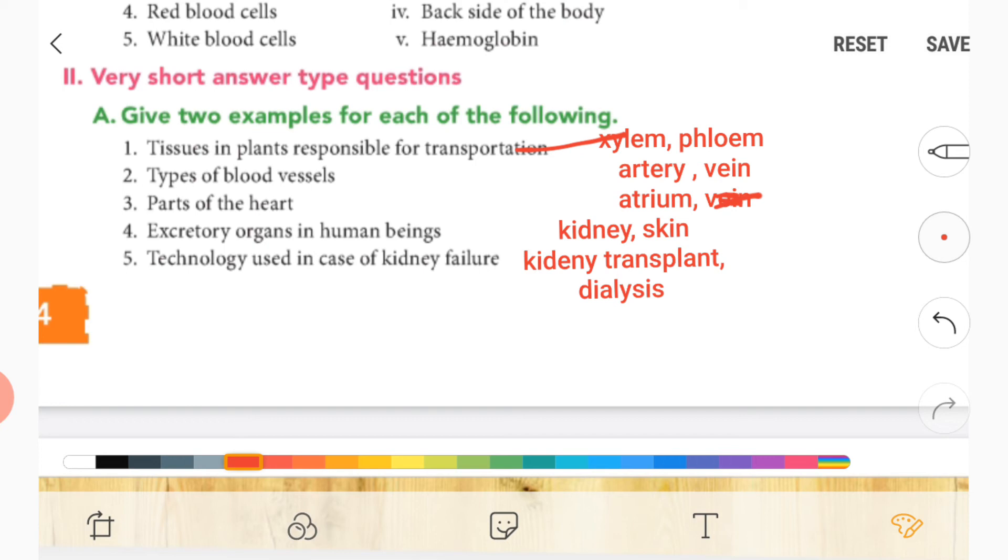Fourth one, accessory organs in human beings—it is kidney and skin.